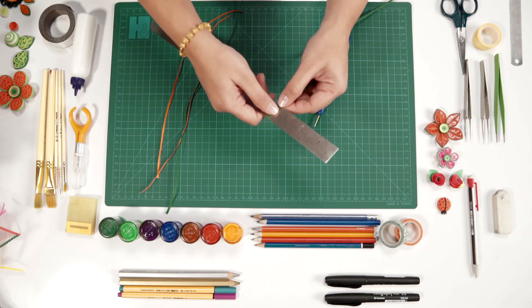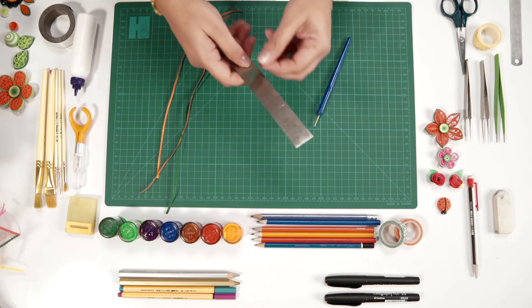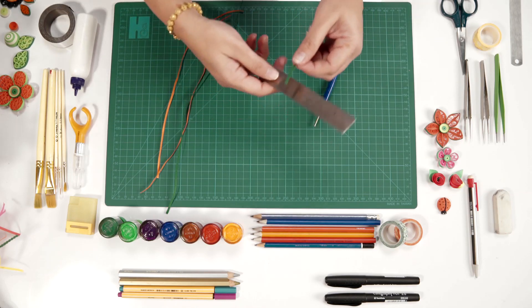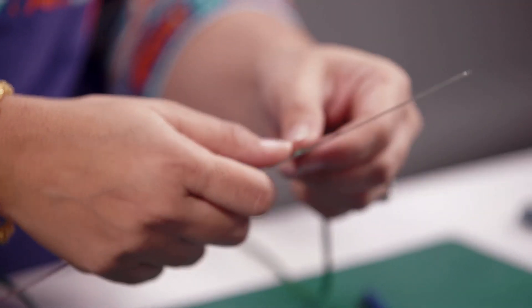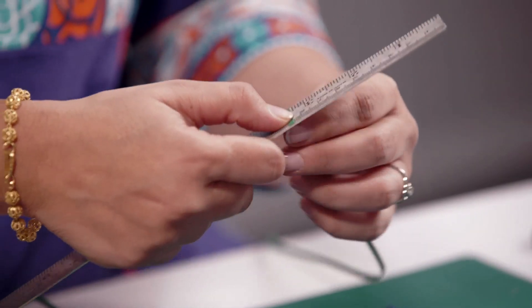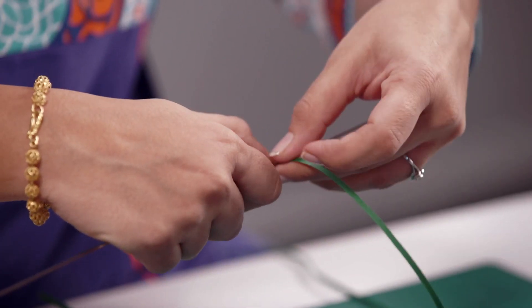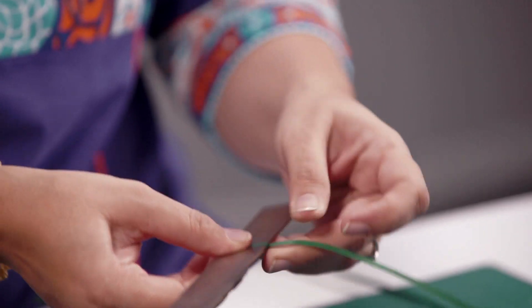I am going to teach you quilling art. So for that we will make a mold and for that we need a scale. Take a strip of paper and roll it around the scale.